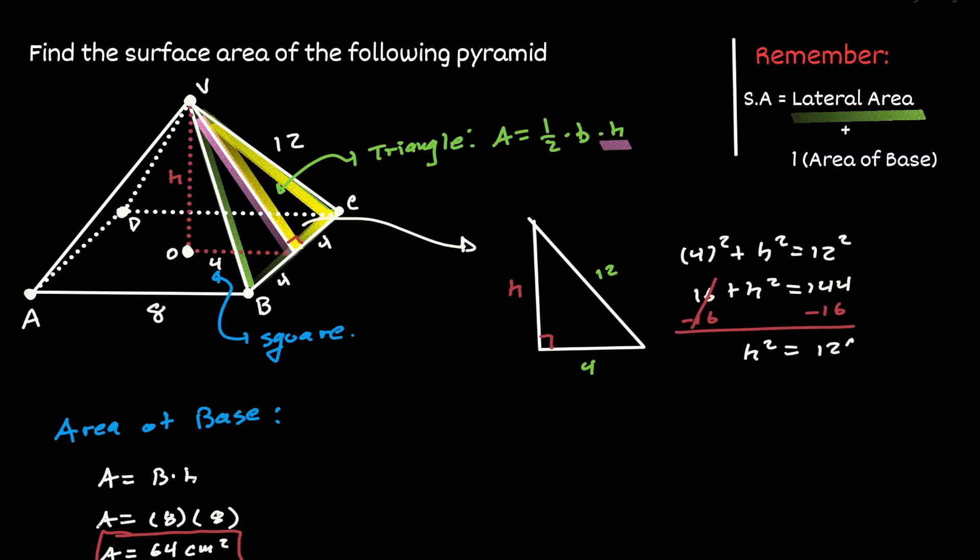So h square is 128. And when we take the square root, the height of this triangle is approximately 11.31. So now we have the height that we needed to find the area of the triangle on the side of the pyramid.